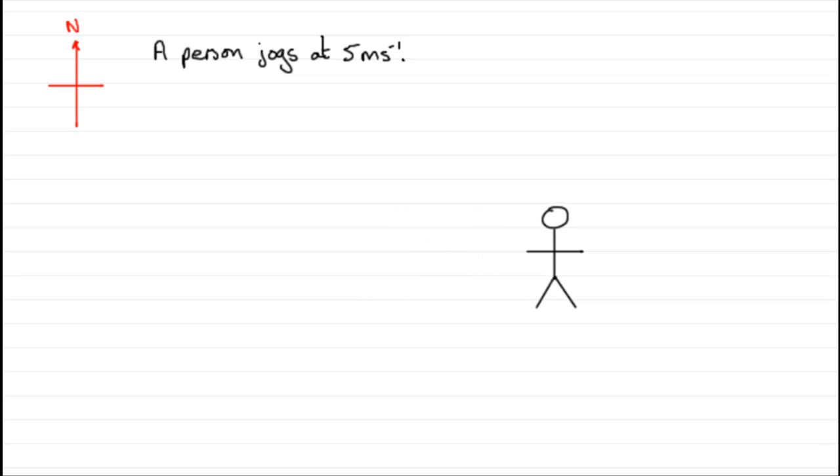and direction, to the east. And if our jogger was to move at 5 meters per second to the left in a westerly direction, again, I'm giving you a quantity that involves both magnitude and direction.